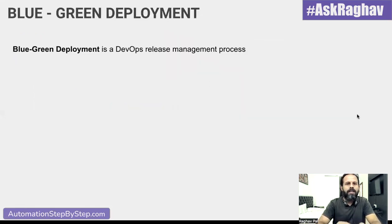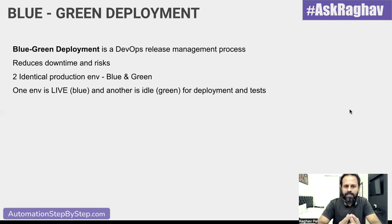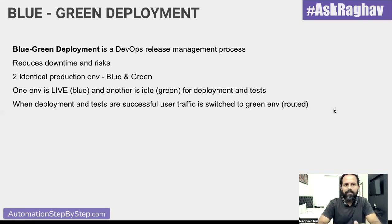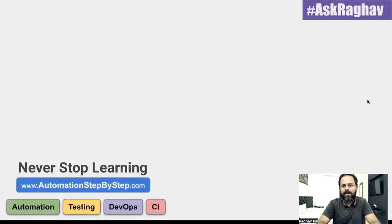Blue-green deployment is a DevOps release management strategy which reduces downtime and risks. We keep two identical production environments — one called blue and one called green. One environment is live while the other is idle and available for deployments and testing. When deployments and tests are successful on the idle environment, user traffic is switched to the environment with the tested deployed code. I hope this was very useful — if you have any questions, let me know in the comments, and thank you for watching. Never stop learning.